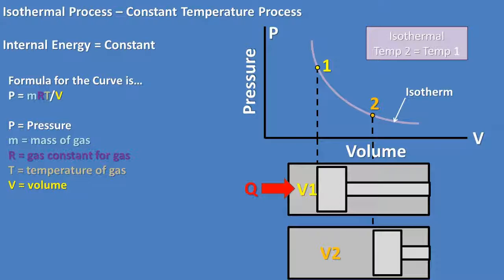The formula for this curve is simply the ideal gas law rearranged so that pressure is on one side of the equation. So pressure equals mass times the gas constant times temperature divided by volume.